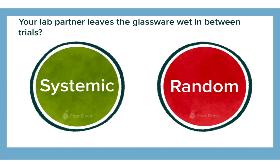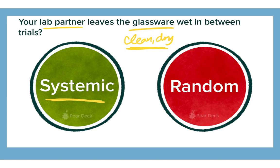An example: your lab partner leaves the glassware wet between trials. Procedures require clean and dry glassware between trials. Though your lab partner made a mistake, because part of the procedure called for clean, dry glassware, you could simply redo that trial — making it a systematic error. It was a procedural mistake, not an inadvertent one.